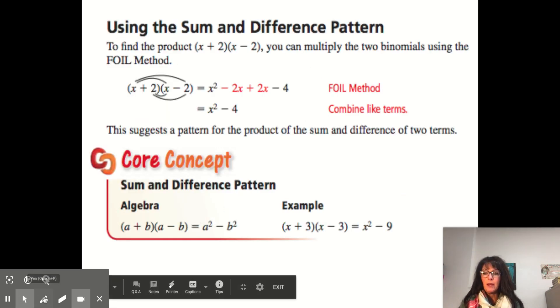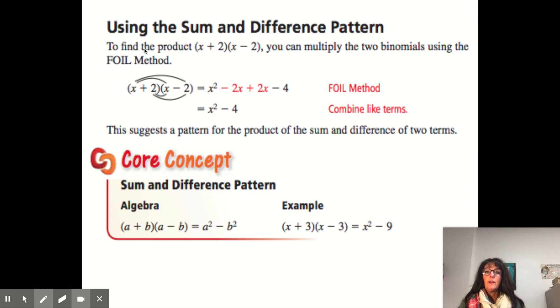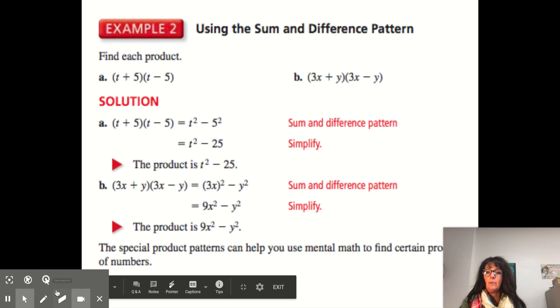Now we're using the sum or difference pattern. So to find the product of, if you have (x + 2) times (x - 2), if you do the FOIL, this is what it would turn out to. And these two middle terms would basically cancel each other out. So this is the pattern right here. You get a² - b². When we see this, we know that we can simply, because pretty soon we're going to be factoring. So we'll be able to take this and factor it back to this. Or we can see this and instead of doing FOIL, say, oh, that's easy. I can take the a² and then subtract the b². And that's what we're trying to do today. Make it pretty simple.